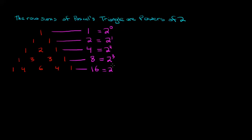So in general it looks like the row sum of row n in Pascal's Triangle should come out to be two to the n. That's a very interesting property, and in this video what we're going to do is prove that this is the case.